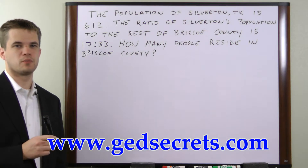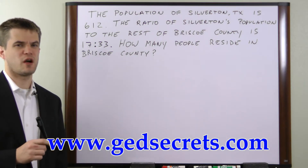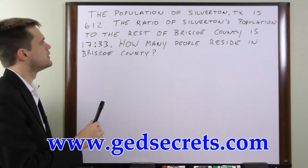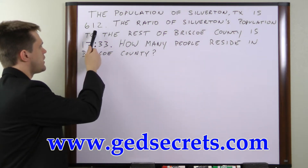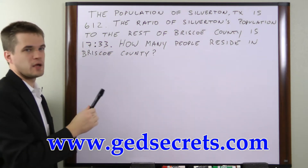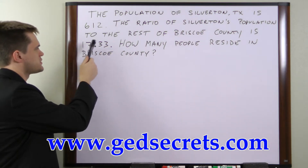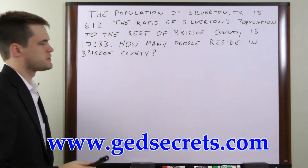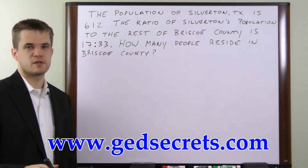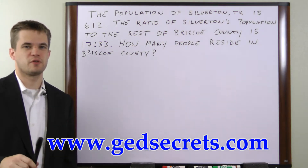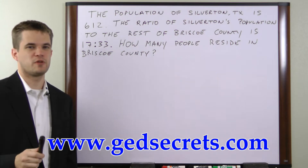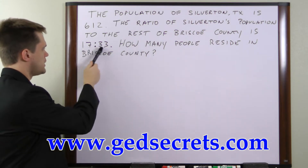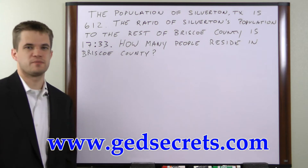In this ratio problem, we're asked to find the total population of a county given the population of one town and the ratio of that town's population to the rest of the county. The key to this, like most other ratio problems, is going to be to figure out how many people each one in this ratio represents.